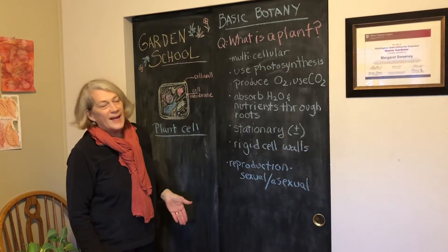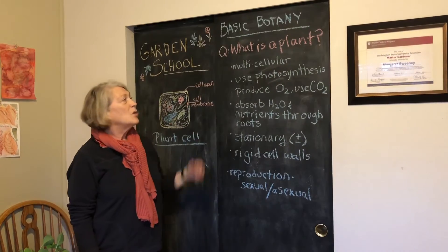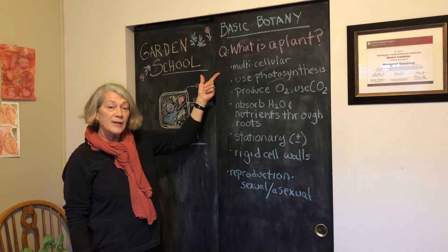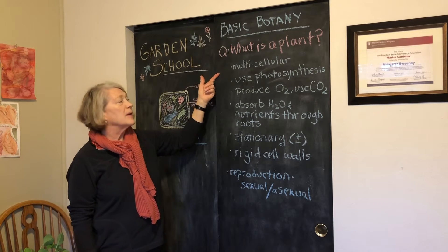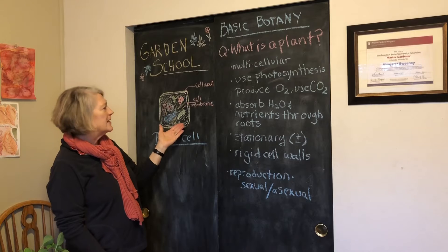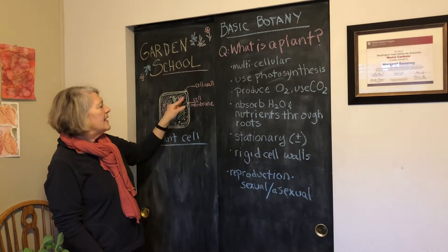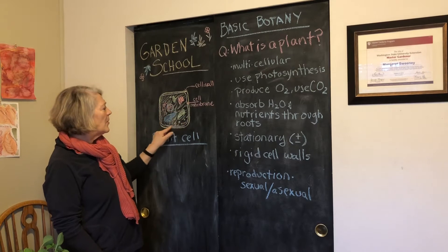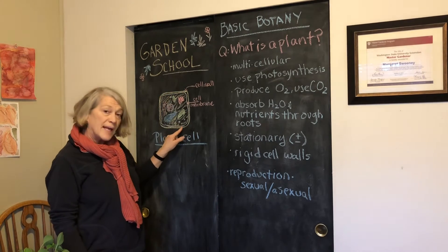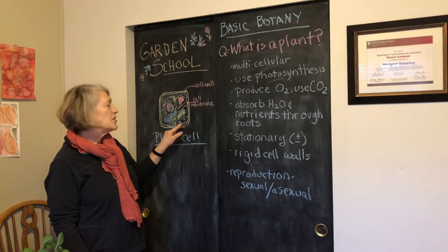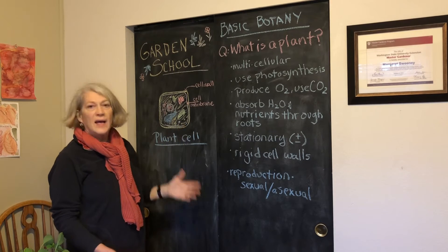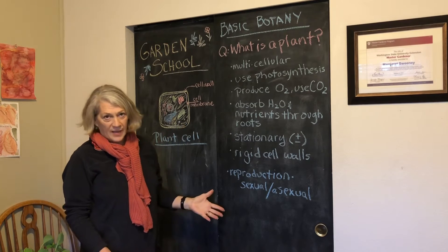Let's just go over that again. So a plant is a multicellular living organism. Now in the plant cell — here's a rough sketch of a plant cell — it has a cell membrane, but outside of the cell membrane there's a cell wall. That's a unique thing for a plant cell as opposed to an animal cell.